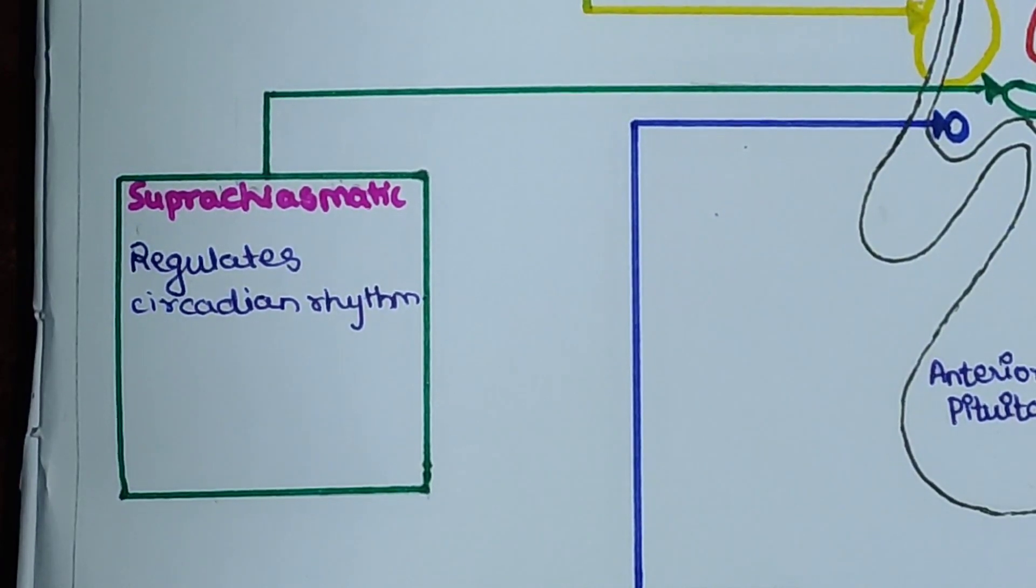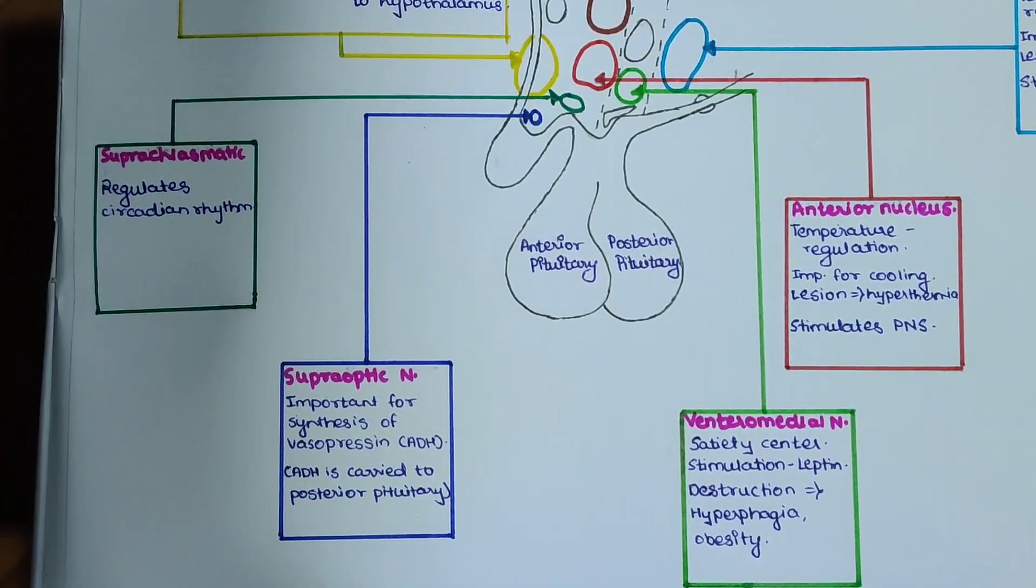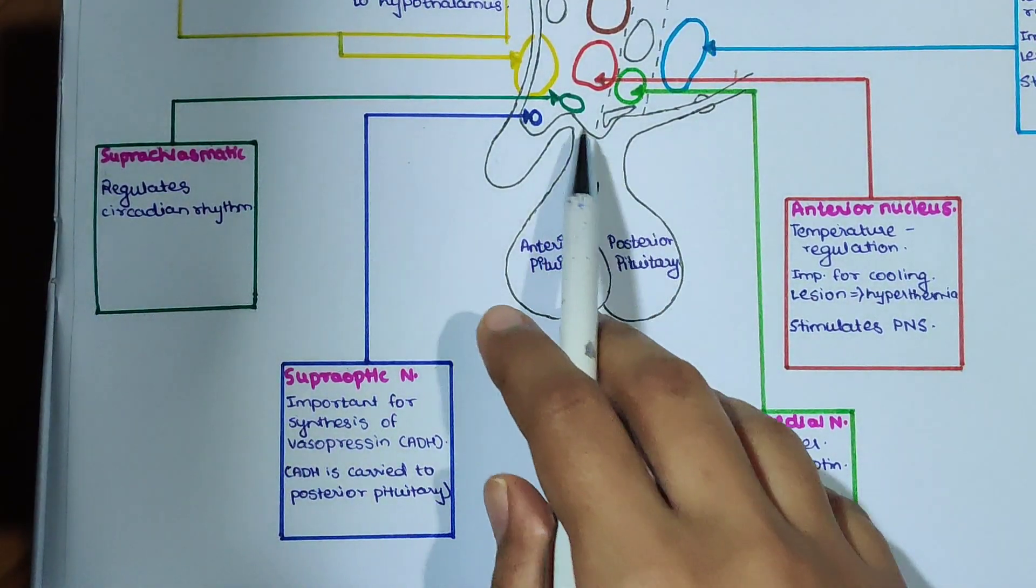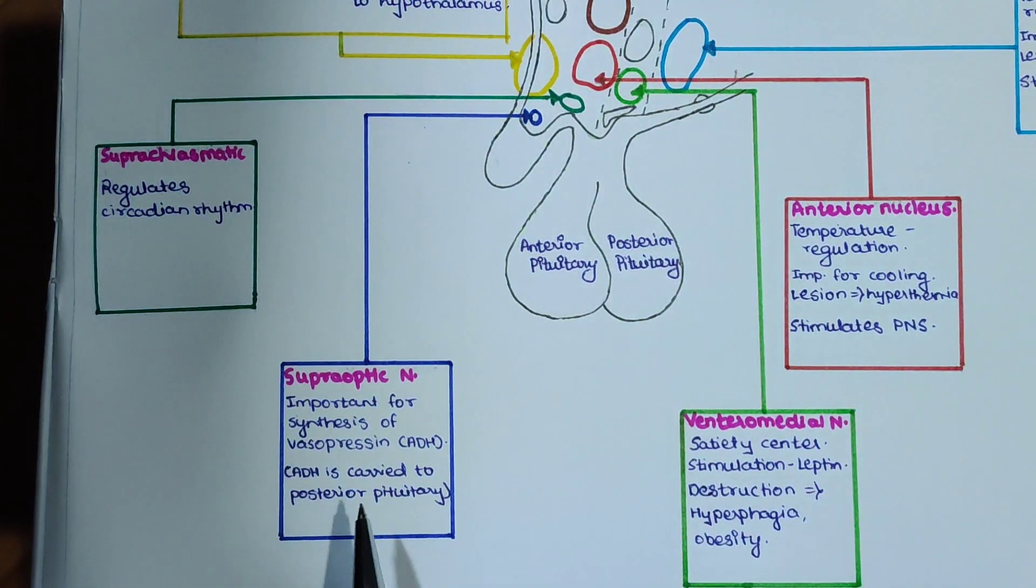Next for discussion we have supraoptic nucleus, shown here in blue. It is important for synthesis of vasopressin, also known as anti-diuretic hormone. ADH is carried to posterior pituitary where it is stored and released.